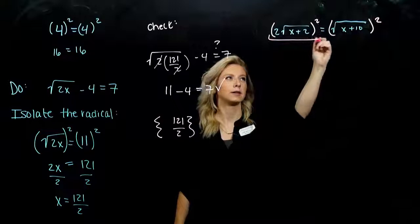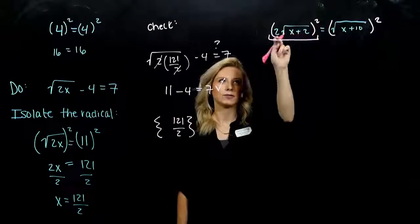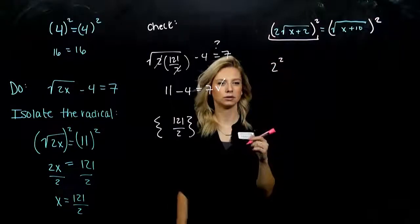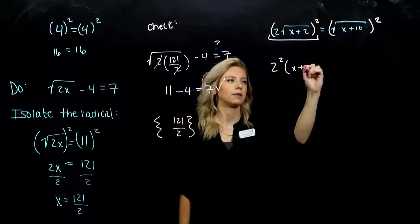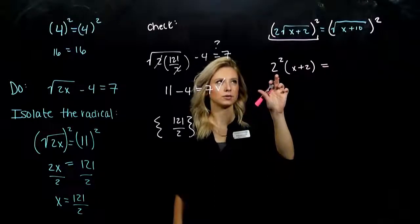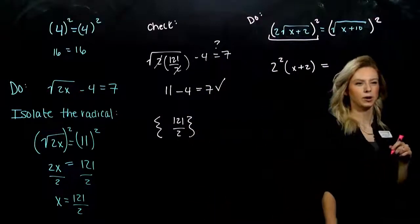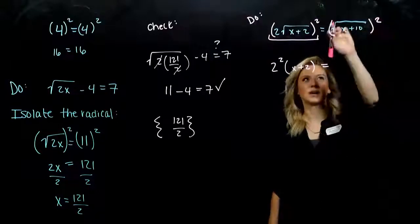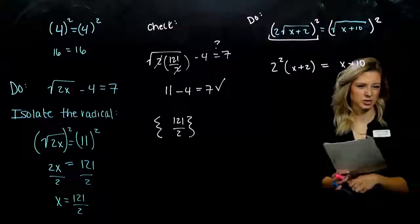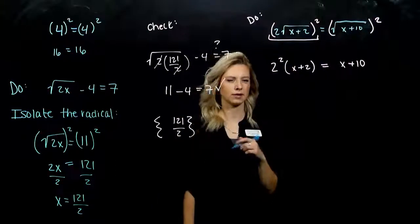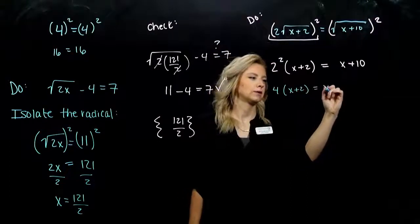But what do we have to remember here? When I'm squaring a product of two things, I have to distribute the square — first to the 2, and then to my radical — so I'm undoing the root and just left with the insides. We have to be careful and remember all of those rules from working with exponents. On the right-hand side, my square is undoing the root and I'm just left with the insides. Once I get there, it's pretty straightforward. I've got 4 times x plus 2 equals x plus 10.